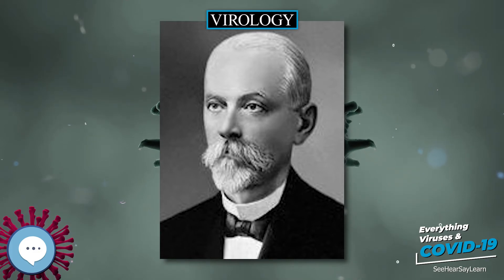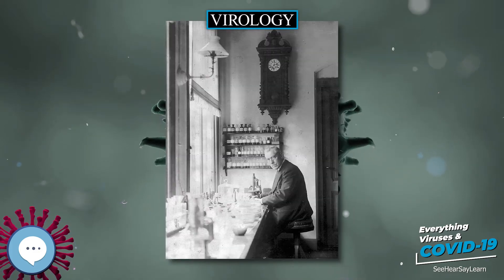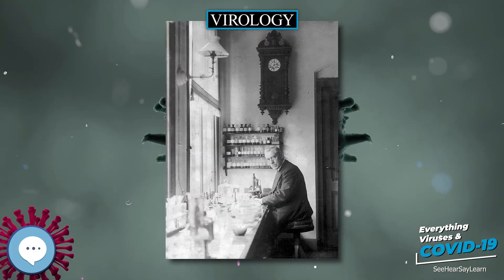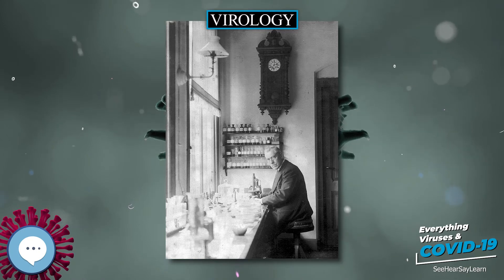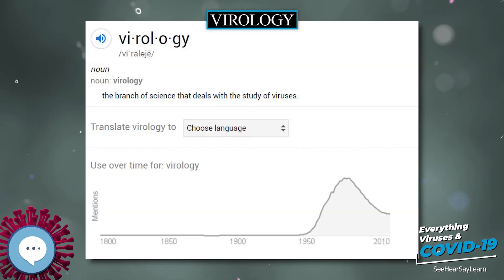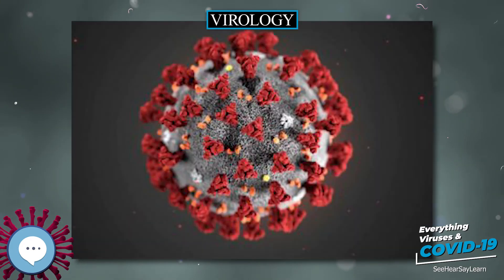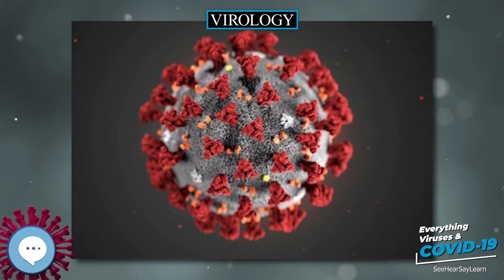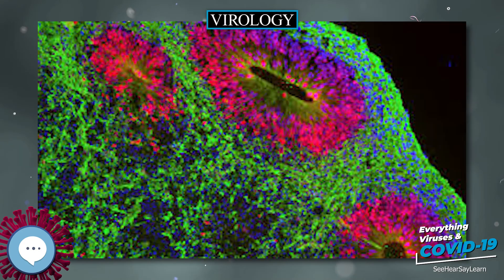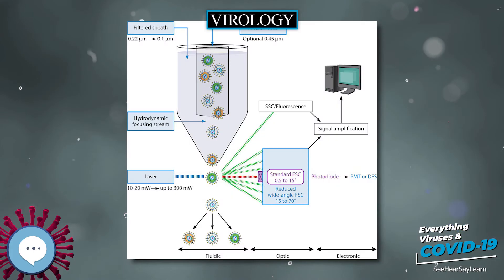Some subviral particles also cause disease. The transmissible spongiform encephalopathies, which include Kuru, Creutzfeldt-Jakob disease and bovine spongiform encephalopathy (mad cow disease), are caused by prions. Hepatitis D is due to a satellite virus. The study of the manner in which viruses cause disease is viral pathogenesis. The degree to which a virus causes disease is its virulence.